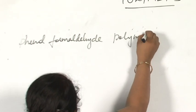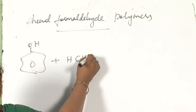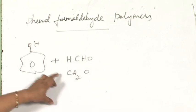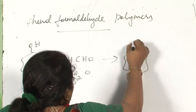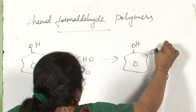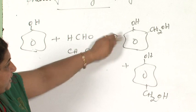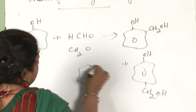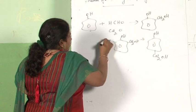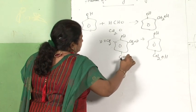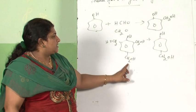Phenol combines with formaldehyde (HCHO or CH2O) to form a basic unit. The reaction gives ortho-hydroxybenzyl alcohol and para-hydroxybenzyl alcohol, and even the 2,4,6-substituted product. So combining phenol with formaldehyde yields ortho, para, and mixed products.